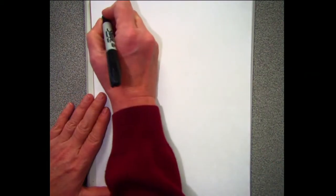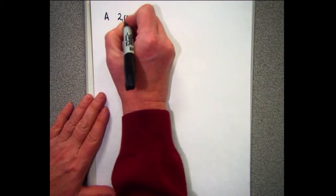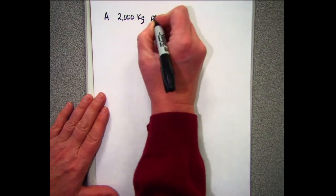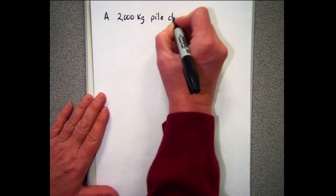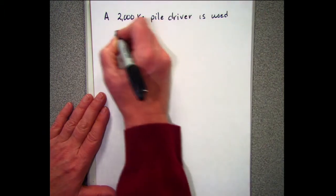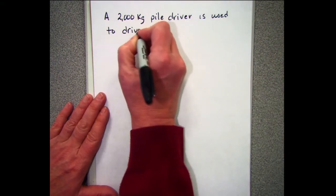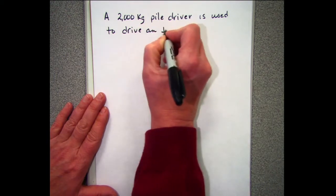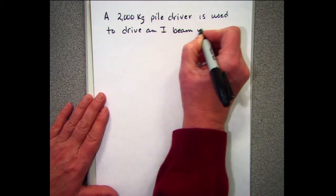We're recording and the document camera is visible. We're going to start with a problem: a 2,000 kilogram pile driver is used to drive an I-beam into the ground.